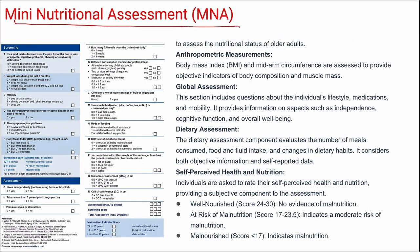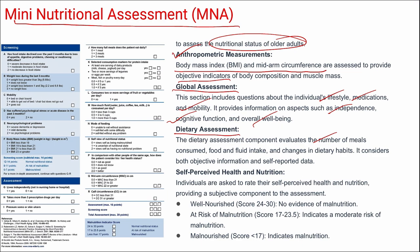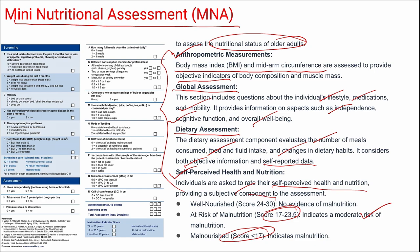Next is the Mini Nutritional Assessment (MNA), used to assess the nutritional status of older adults. It covers four domains: anthropometric measurements (BMI and mid-arm circumference), global assessment (lifestyle, medication, mobility, independence, cognitive function, and well-being), dietary assessment (number of meals, food and fluid intake, changes in dietary habits), and self-perceived health and nutrition. Scores below 17 indicate malnourished, 17 to 23.5 moderate risk of malnutrition, and 24 to 30 indicates no evidence of malnutrition.